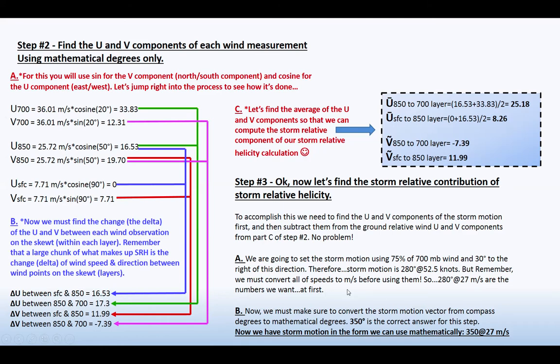But now we must make sure to convert the storm motion vector from compass degrees to mathematical degrees. So 350 is the correct answer for this step. Now we must have the storm motion in the form that we can use mathematically. 350 at 27 meters per second.